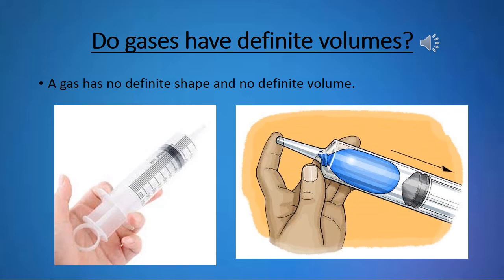Gases occupy less space when compressed. They can also flow and spread out to occupy a larger space. It means that a gas has no definite volume. A gas has no definite shape and no definite volume.